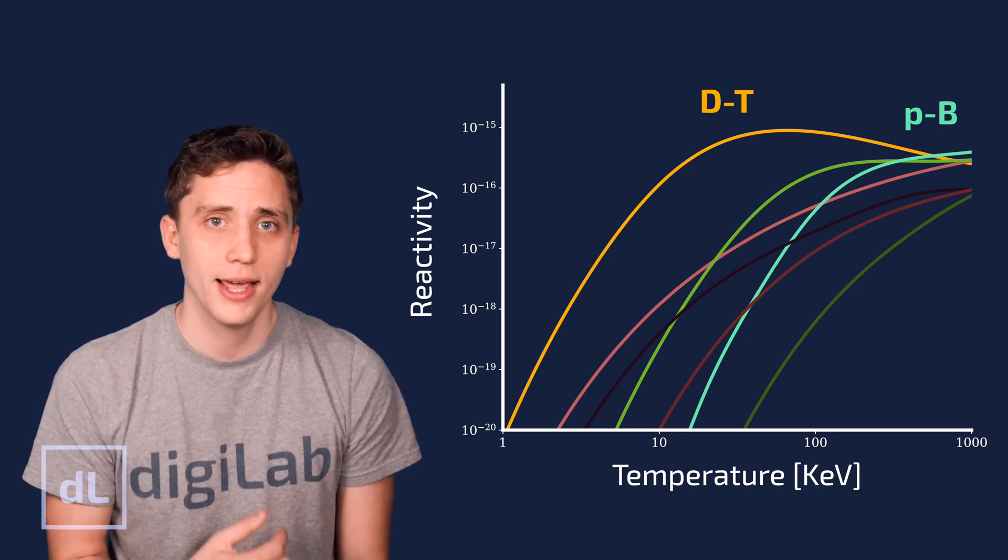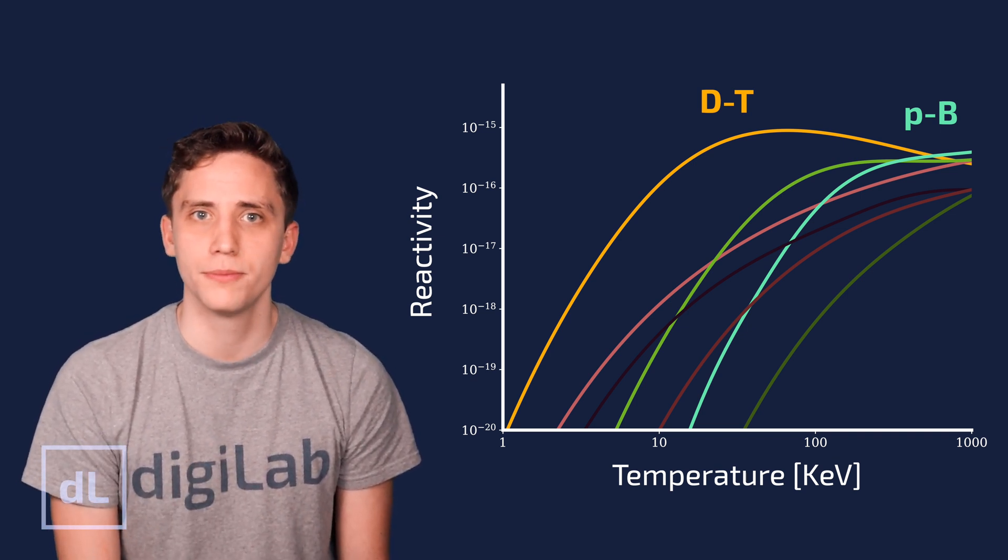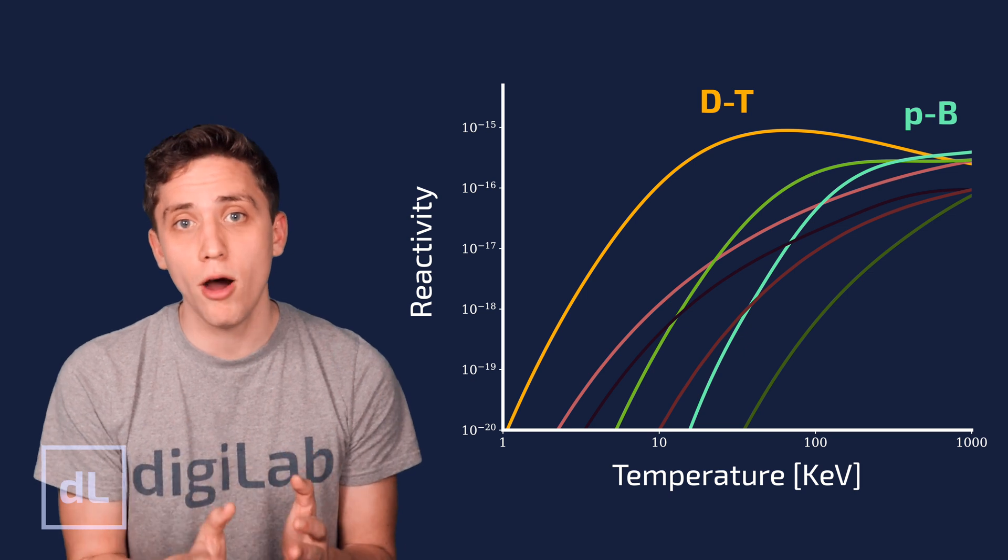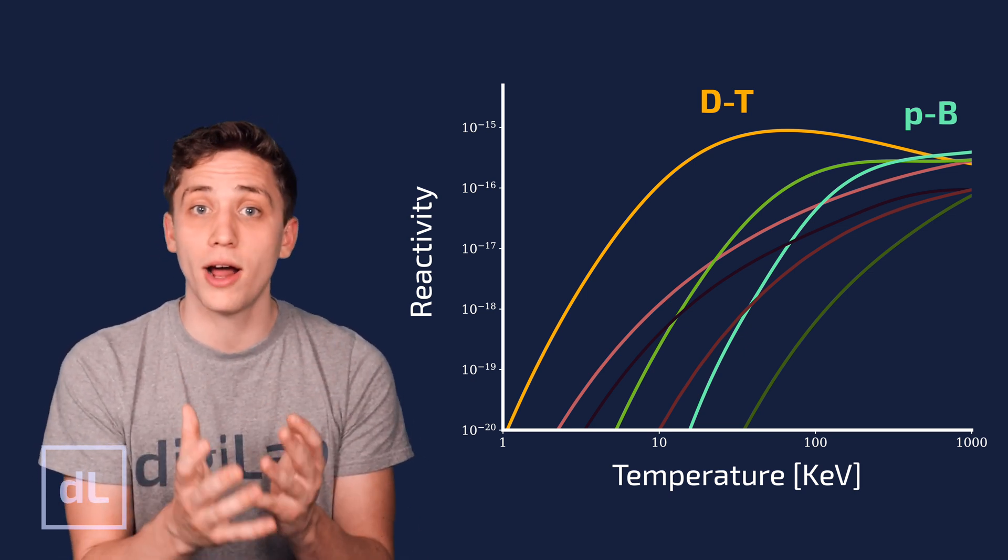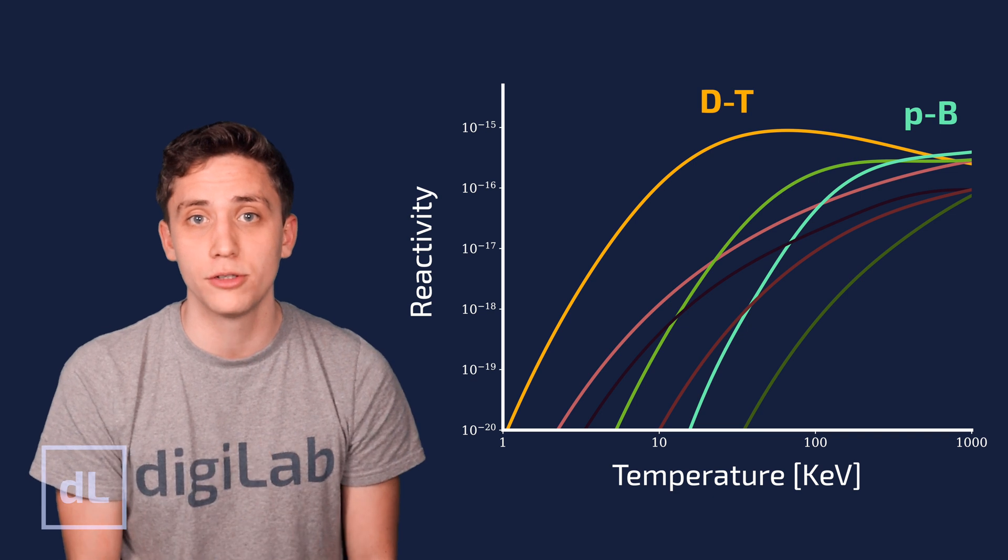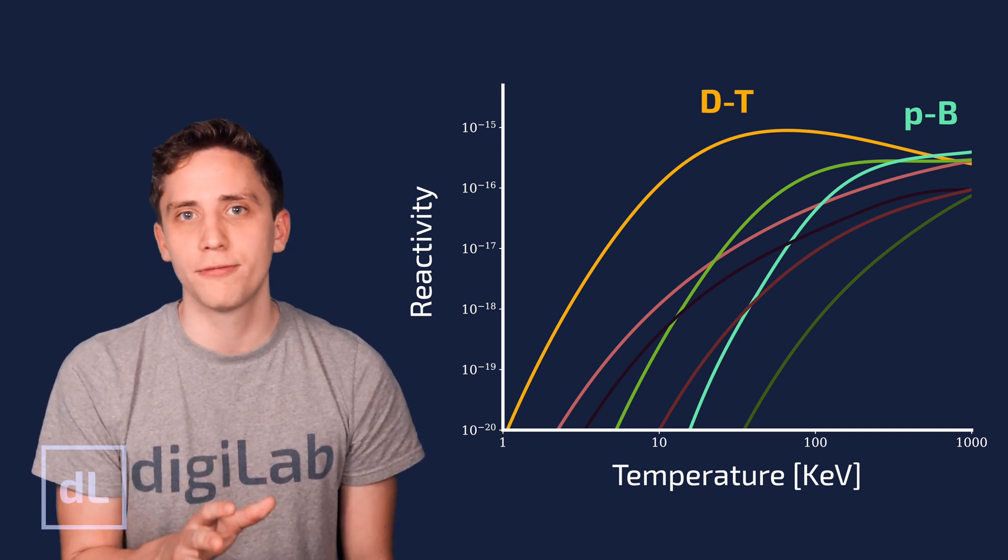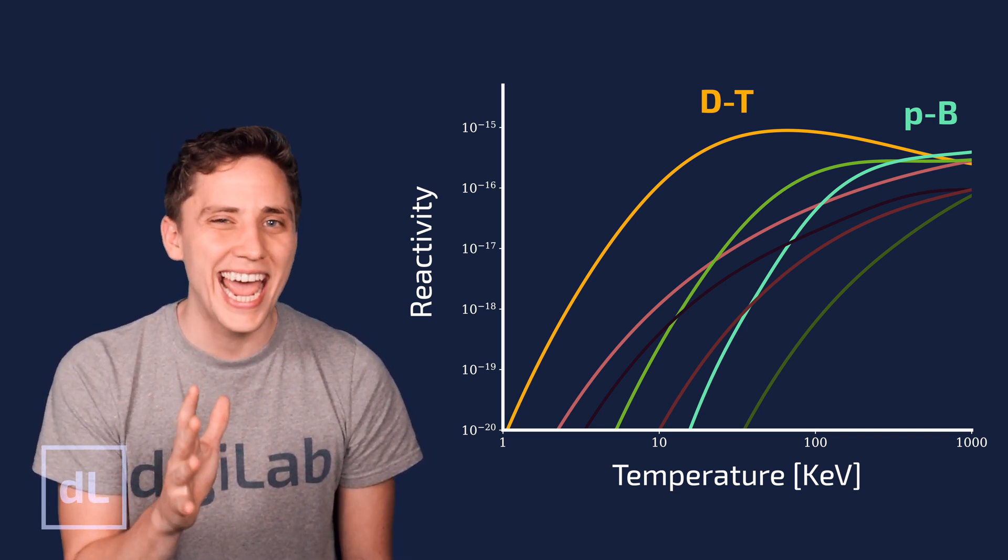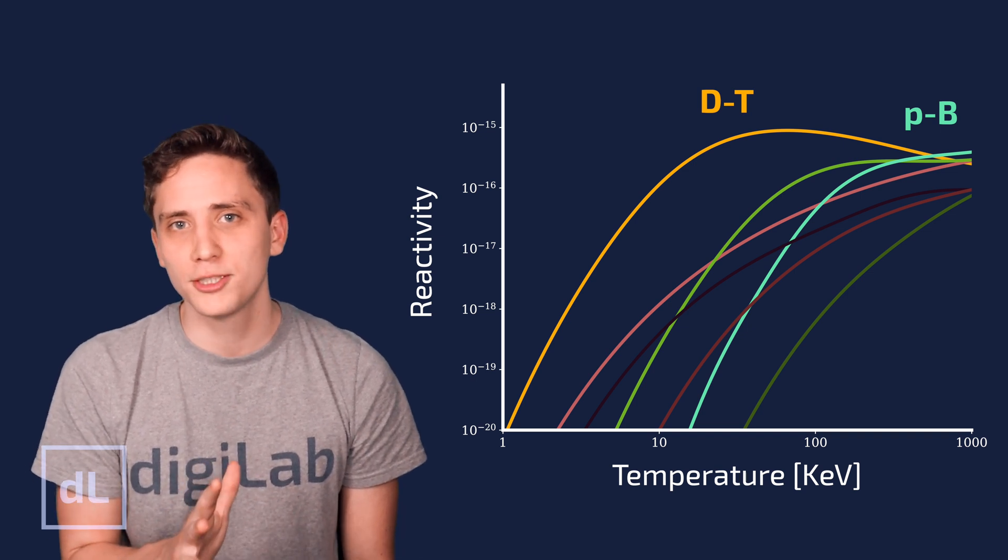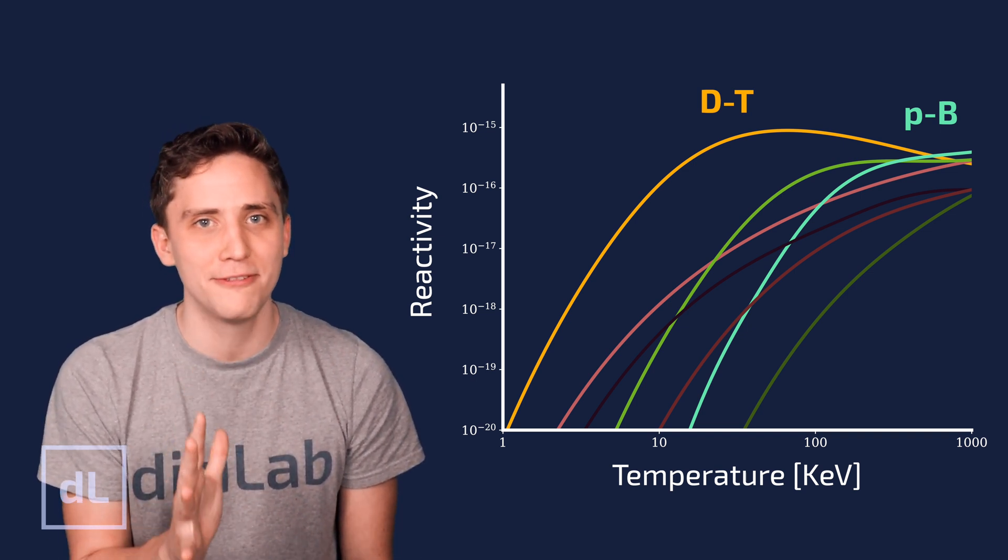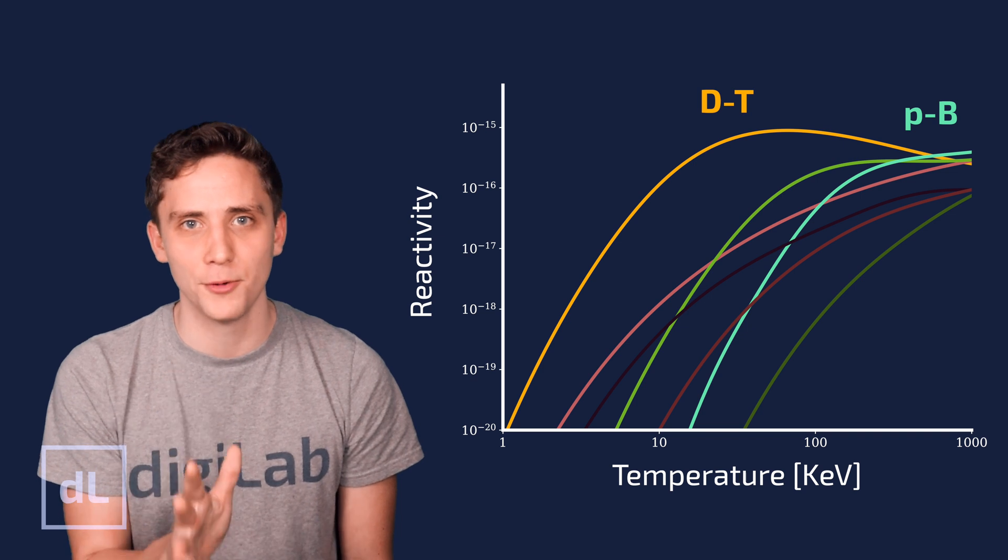Crucially, coming back to the figure, it tells us another important thing about fusion. And that's the fact that if we want to operate with DT fusion and we want the highest reactivities or highest chances of a successful fusion reaction, we need to get the fuel to around 10 keV or above the 10 keV range. This corresponds to roughly 150 million degrees.